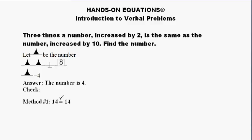Method two for doing the check is to redo the original setup for the problem and do the check there. So let's go back and do it again. Three times the number increased by two is the same as the number increased by 10.